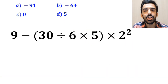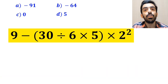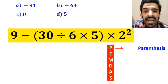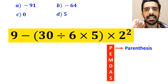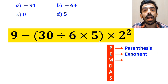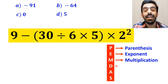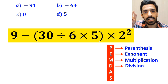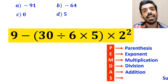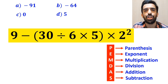Now let me show you how to solve this expression correctly. To solve this question, we need to follow the order of operations, which is PEMDAS. In this rule, P stands for parenthesis, E stands for exponent, M stands for multiplication, D stands for division, A stands for addition, and S stands for subtraction.